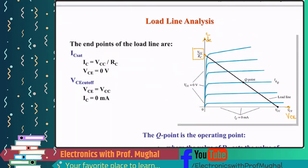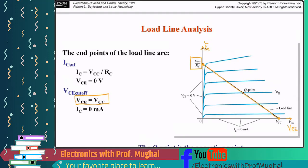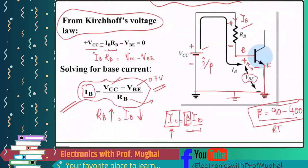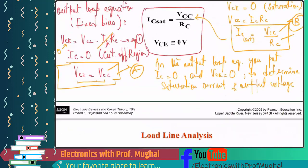This point here represents VCC over RC, and this point here represents VCC because VCE equals VCC. You join these two endpoints and draw a straight line. From your analysis you know IB — say IB is some number — so you make a Q point here. If you draw a straight line across, you get your VCE value, and if you draw a straight line down, you get your IC value.